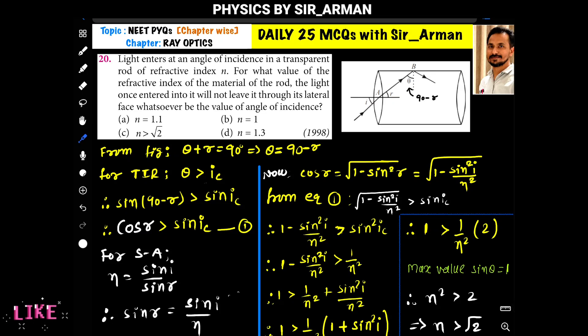Light enters at an angle of incidence in a transparent rod of refractive index n. For what value of refractive index of the material of the rod will the light, once entered into it, not leave through its lateral face, whatever be the angle of incidence? Right now it is passing from rarer to denser, it will bend towards the normal and it is incident here at an angle theta such that the light bends back into the surface.